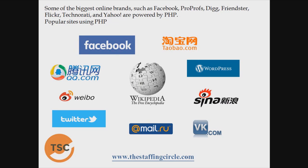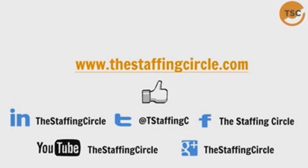Some of the biggest online brands powered by PHP include Facebook, ProProfs, Digg, Friendster, Flickr, Technorati, and Yahoo. Other popular sites using PHP include facebook.com, wikipedia.org, qq.com, twitter.com, taobao.com, wordpress.com, sina.com.cn, vk.com, mail.ru, and weibo.com. Thank you so much for watching — please like, share, and subscribe for more videos.